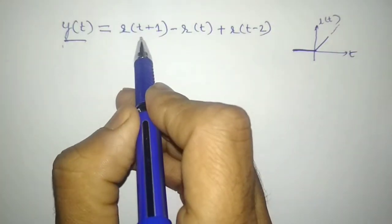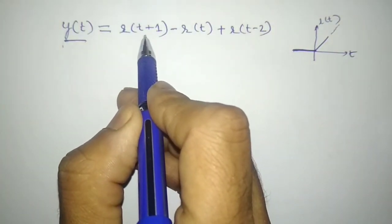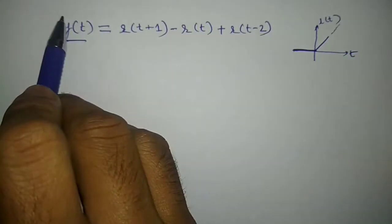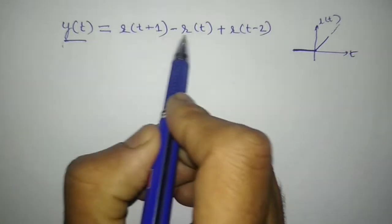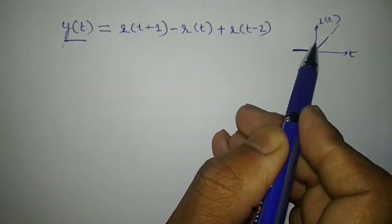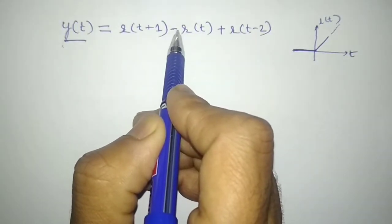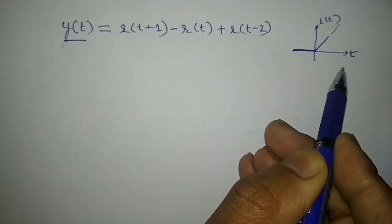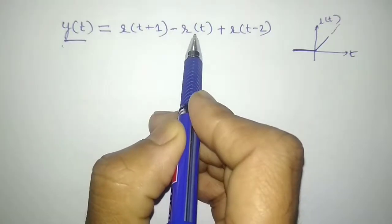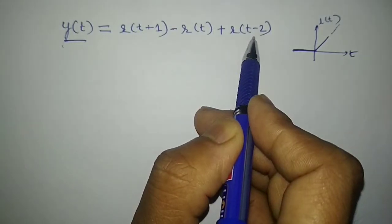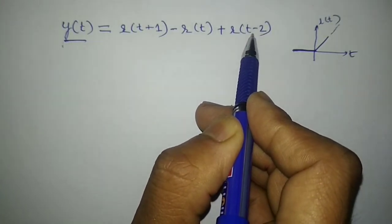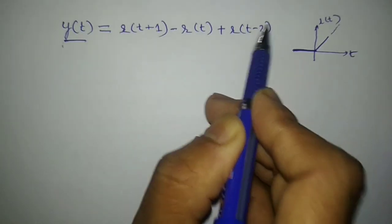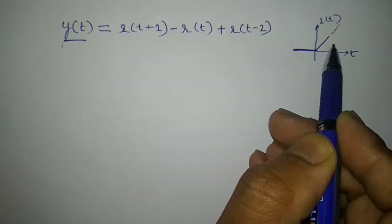So what is r(t+1)? r(t+1) is a shifted version of r(t) — it has been shifted to the left by 1. Then I need to consider minus r(t), wherein the amplitude gets reversed. And r(t-2) is the shifted version of the ramp signal, shifted to the right by 2.